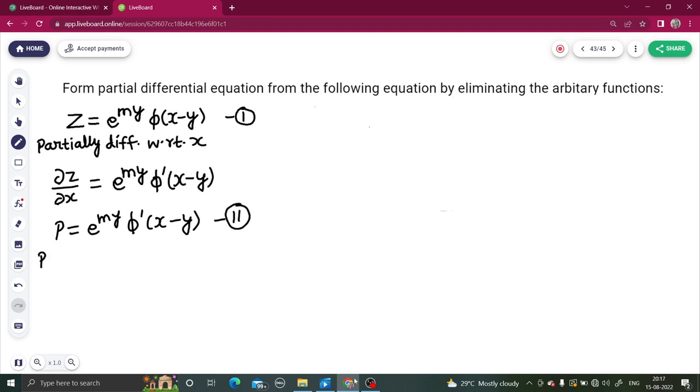Next, repeat the same step but this time with respect to y. Partially differentiate with respect to y. So, you will get del z by del y to be equal to. Now, this time it will be a product of two functions because y you are partially differentiating with respect to y taking x as constant.